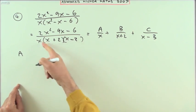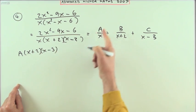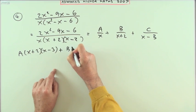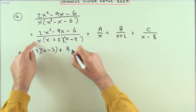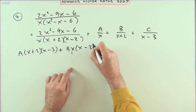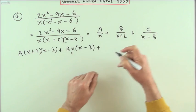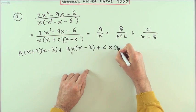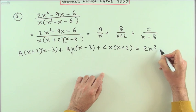Multiplying throughout by this denominator would give me: A, it's got the x already, so I'll need the (x+2) and the (x-3) to multiply the numerator. B's got the (x+2) already, so I'll need the x times (x-3) to multiply it. C's got (x-3) already, so it'll need the x times (x+2) to multiply the numerator. And I'll just leave that numerator there, which is 2x² - 9x - 6.